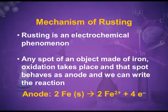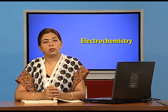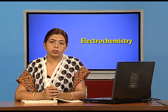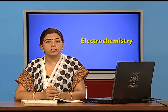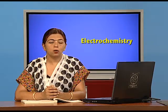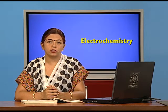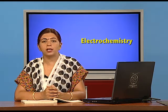Let me explain the mechanism of rusting. Any iron article, when it comes in contact with air and moisture, starts developing a brown coating — this brown coating is rust. Chemically it is hydrated ferric oxide. Any point on the iron which first comes in contact with air and moisture starts acting as anode, meaning loss of electrons (oxidation) takes place at that point.